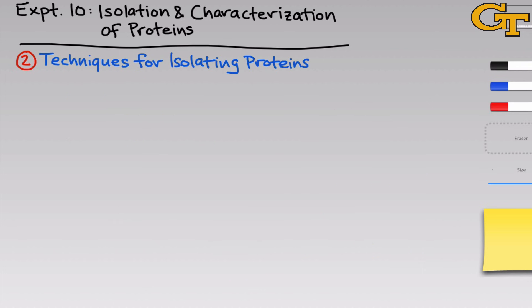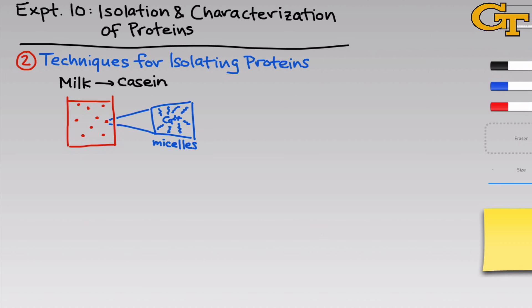With that introduction to protein structure, let's talk about the techniques we'll use in this experiment to isolate proteins. We'll begin with milk and isolate casein proteins from it, which is essentially a colloid composed of casein micelles. Calcium in milk is stabilized by a surrounding sphere of casein molecules. These micelles are large enough to stay suspended in milk so that milk looks like a homogeneous solution.